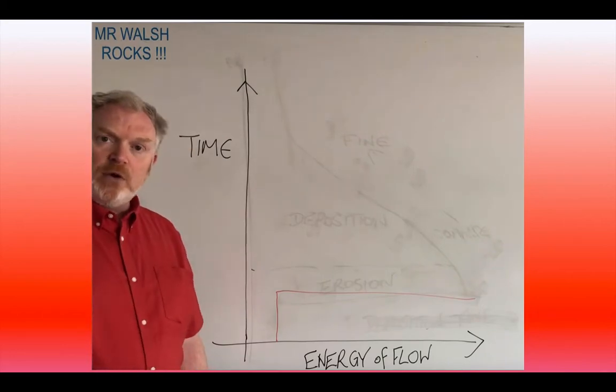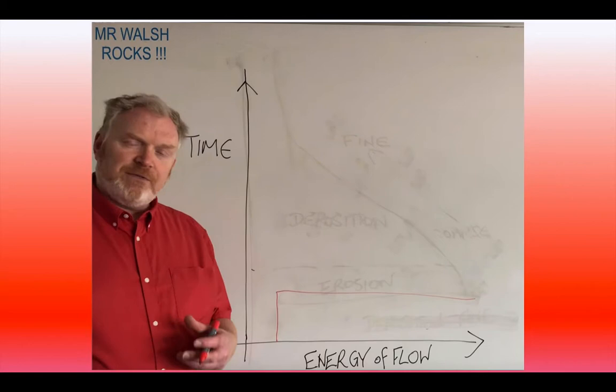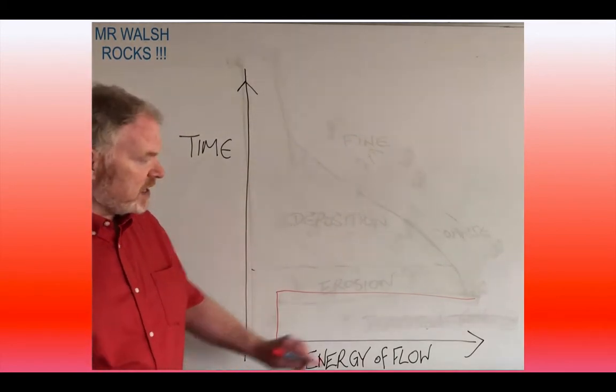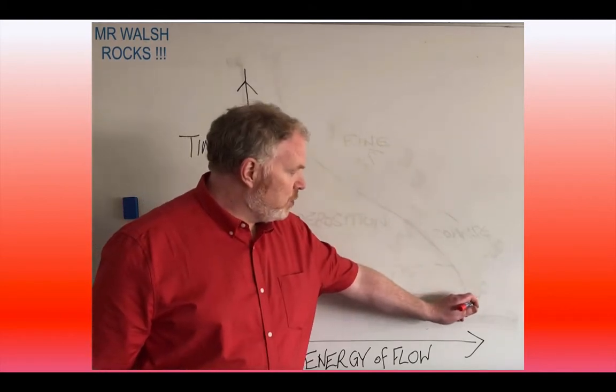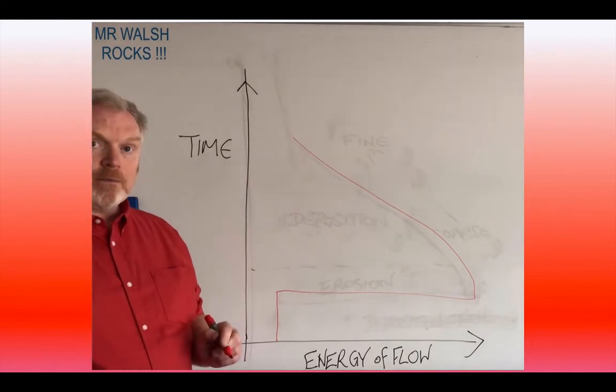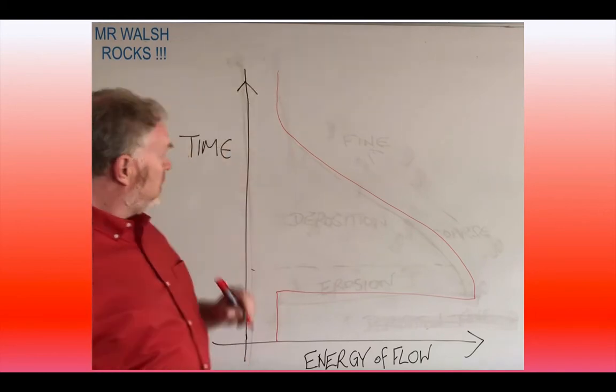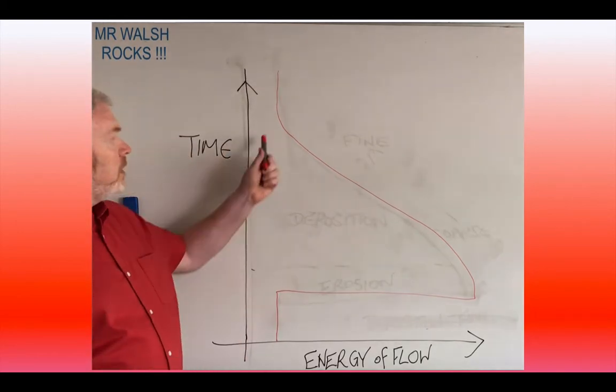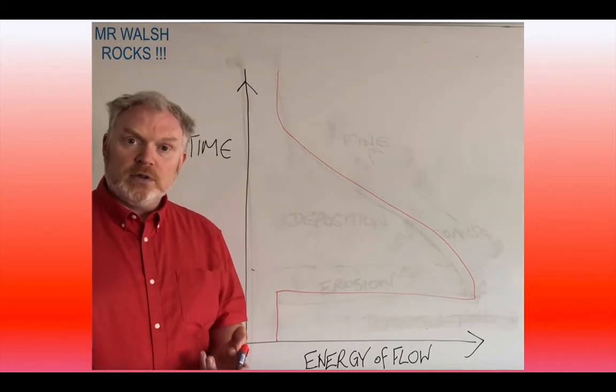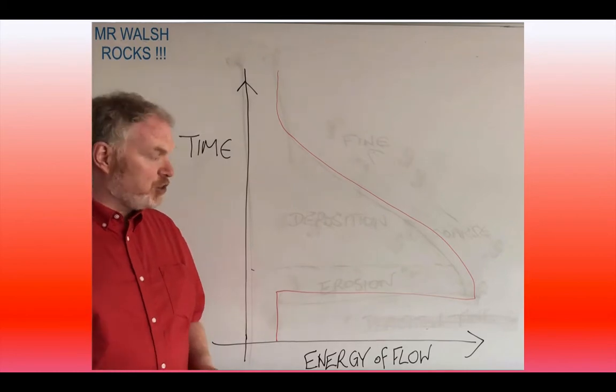Once the fastest part of the flow has passed our point though, the bits of the flow behind it inevitably are going to be slower. Therefore, they're going to have less energy. So what we see over time is that energy level dropping until eventually, as the turbidity flow has passed, the energy level will go back to the normal low energy environment that we'd expect in a deep ocean environment.